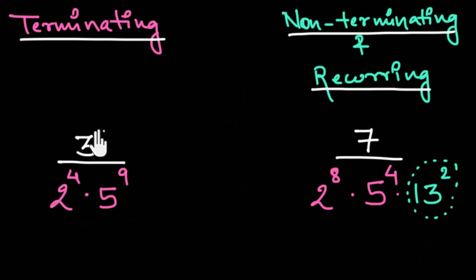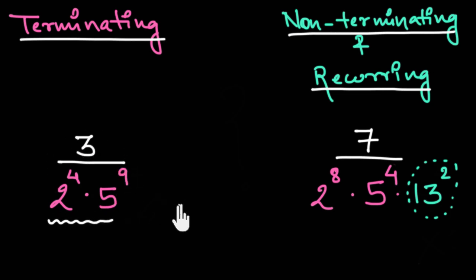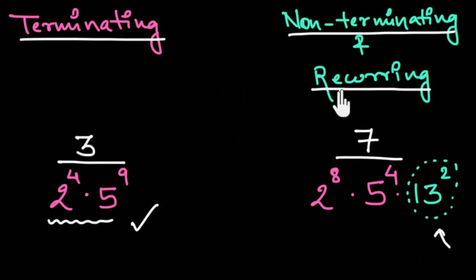For example, in this case we can see that in the simplest form of this rational number, the denominator can be factorized into twos and fives only. Hence, the decimal form of this rational number would be terminating. While in this case, we have an extra factor other than twos and fives, which would make the decimal form non-terminating and recurring.